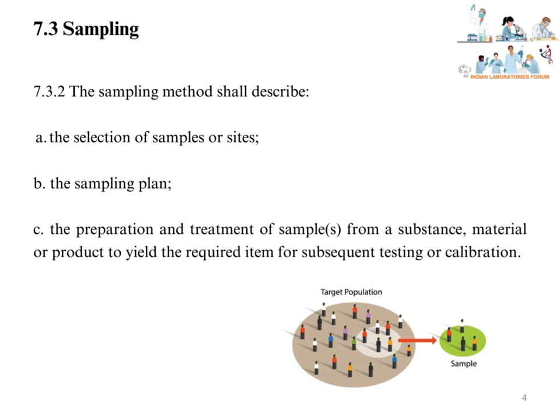When the laboratory prepares the method for sampling of specific products, these points should be considered mandatorily. The sampling method shall describe: the selection of samples or sites — meaning details of how to select the samples and from where samples should be collected; and the sampling plan — meaning details of how many samples from how many sites should be collected.